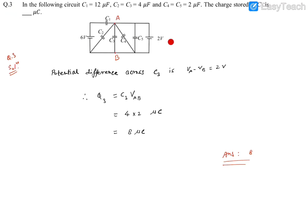Question number three, this was the easiest one in this paper. It says in the following circuit C1 is given, C2, C3, C4, C5 all are given. The charge stored in C3 is going to be, now look at this circuit carefully.